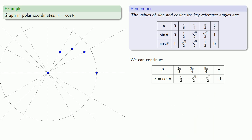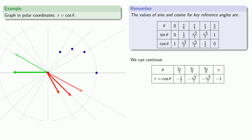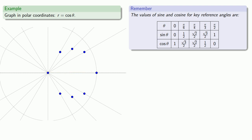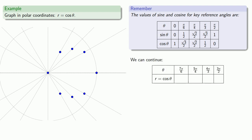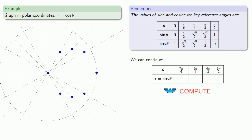Because our r values are negative, plotting these points means we're going to turn to face these angles, but then we're going to walk backwards. We're still only halfway around the pole, so we should continue with additional values of theta, which give us additional values of r equals cosine theta. Again, our r values are negative, which means after turning to face the direction specified by the angle, we have to walk backwards.